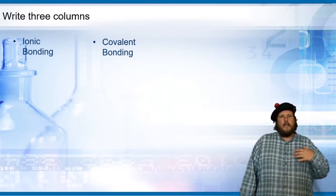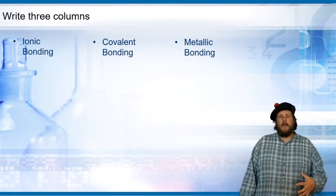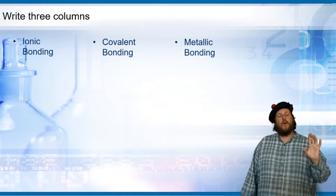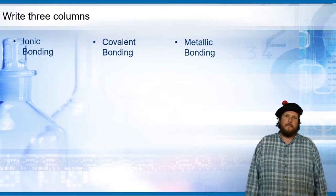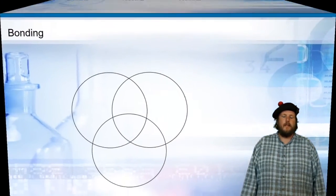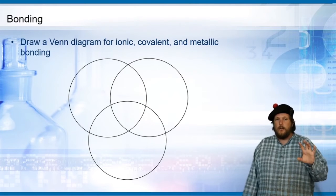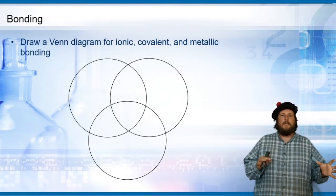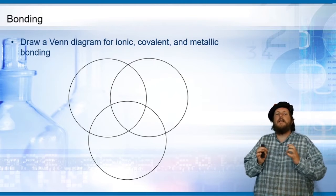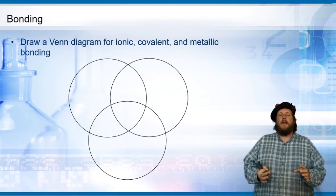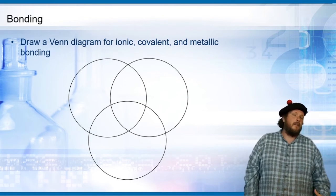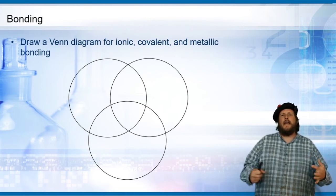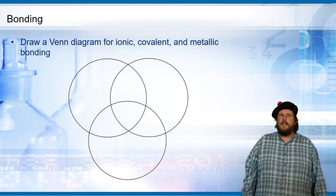We've talked about three types of bonding: ionic bonding, covalent bonding, and metallic bonding. You should write three lists covering the properties of each. Once you've done that, draw a Venn diagram for those three types of bonding — ionic, covalent, and metallic — showing what they share in common. I'll give you a free one: in the middle, electrons should be one of the things. All bonding has to do with the behavior of the electrons in those materials.